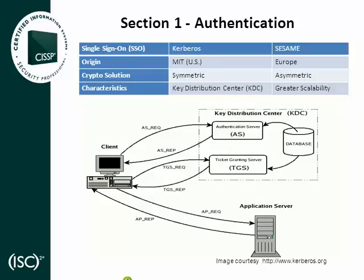Sesame is an authentication protocol similar to Kerberos but was developed in Europe. Sesame does not use a KDC, but separates that functionality into two distinct services: the authentication server, or AS, and the privileged attribute server, or PAS. In contrast to Kerberos, Sesame provides authentication traffic protection through asymmetric cryptography. Asymmetric cryptography uses public and private key pairs and is more commonly referred to as public key cryptography. This asymmetric cryptographic approach provides greater scalability and manageability when compared with Kerberos.